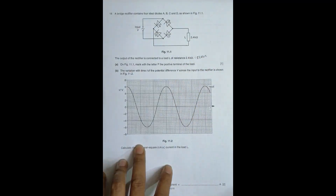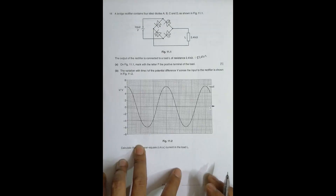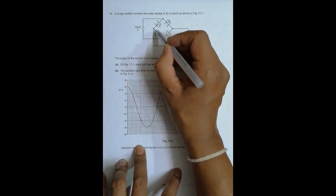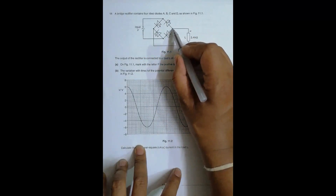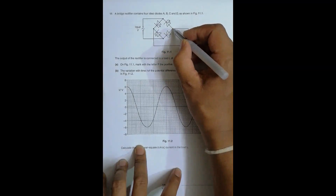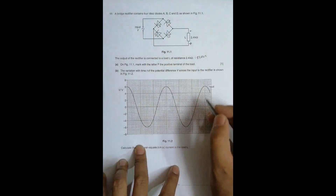On figure 11.1, mark with the letter P the positive terminal of the load. We have to remember that in a bridge rectifier, the positive terminal of the load will be at the point where the n-sides of two of the diodes meet. The positive polarity will be at that side of the load connected to the junction of n-sides of the diodes. The other end connects to where the two p-sides of the diodes connect, making that end negative.